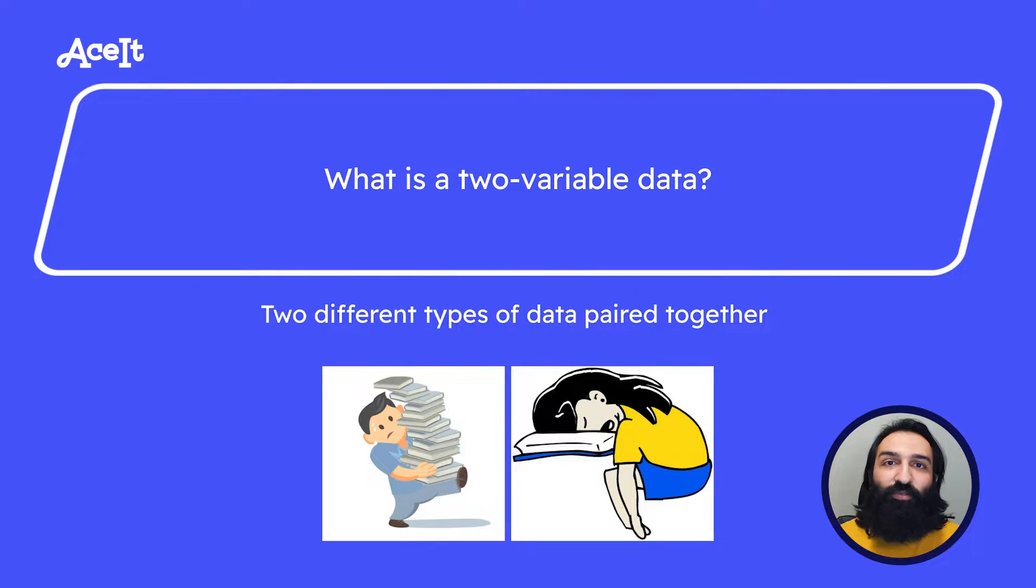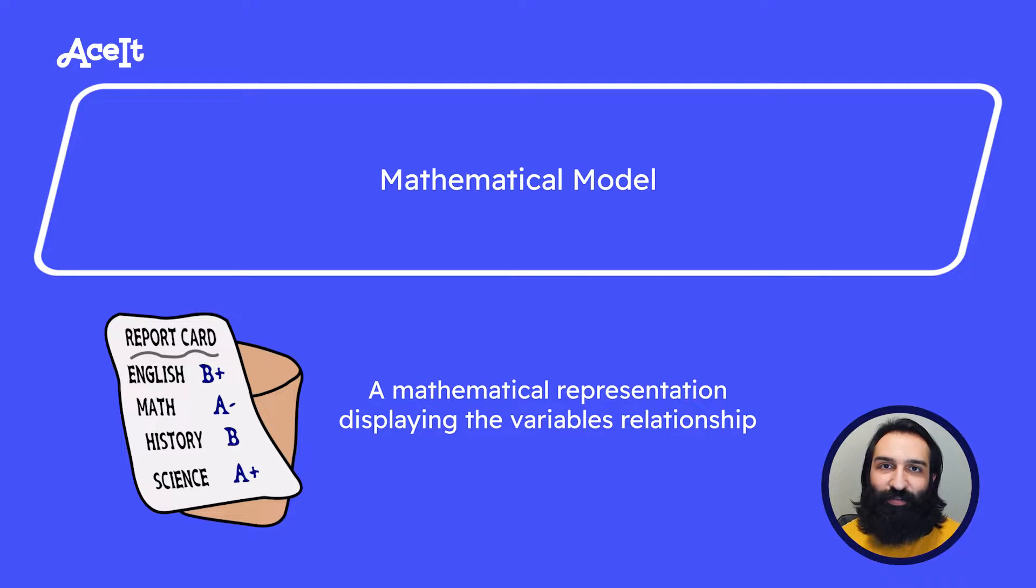Two variable data involves two different types of variables such as the number of hours a student spends studying and the grade that they get. Now how do we make sense of all this data? That's where models come in.